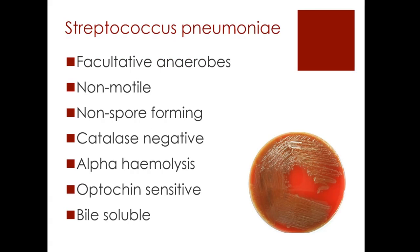Talking about some of its qualities: it's a facultative anaerobe, so it can survive in both an aerobic and anaerobic environment. It's non-motile and non-spore-forming. Again, these are similar characteristics to Staphylococcus aureus. It is catalase negative, and this is a test used in microbiology to differentiate between staphylococci and streptococci. Staphylococcus aureus in particular is catalase positive, so if we know it's catalase negative, we know it's not staphylococci.